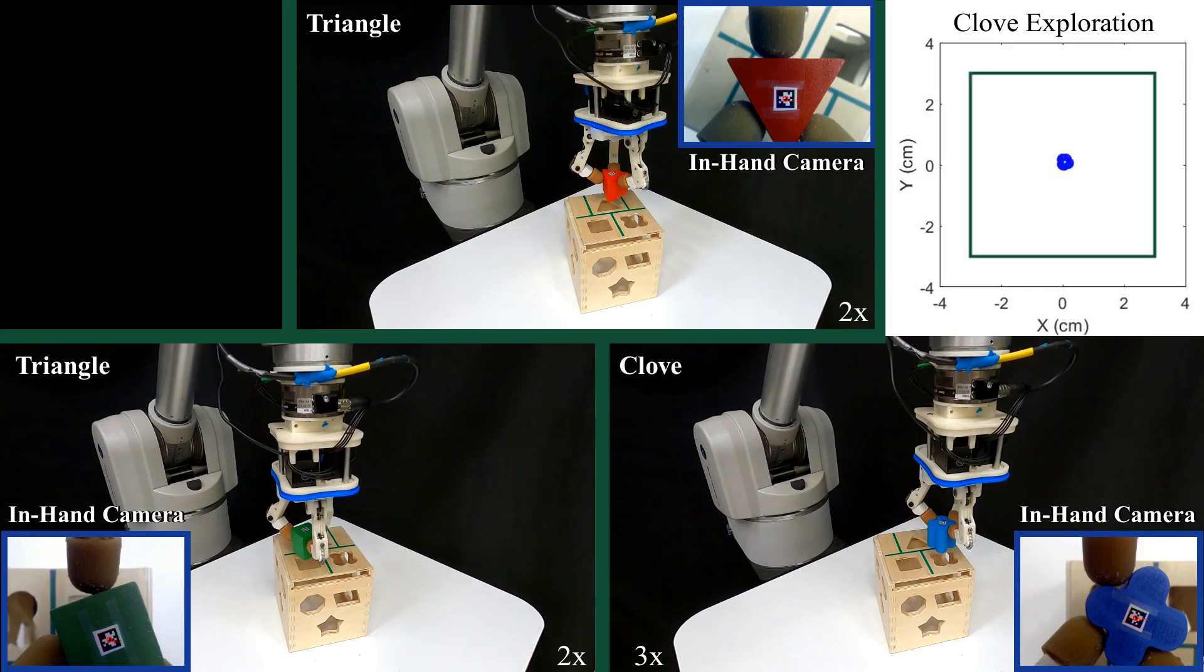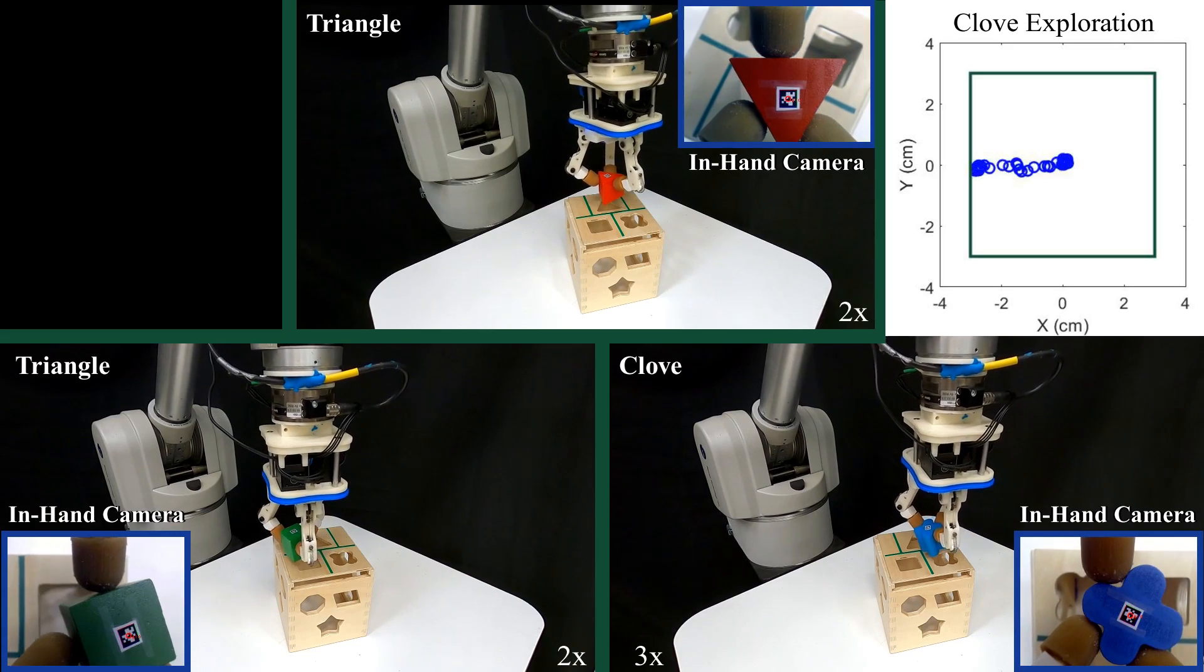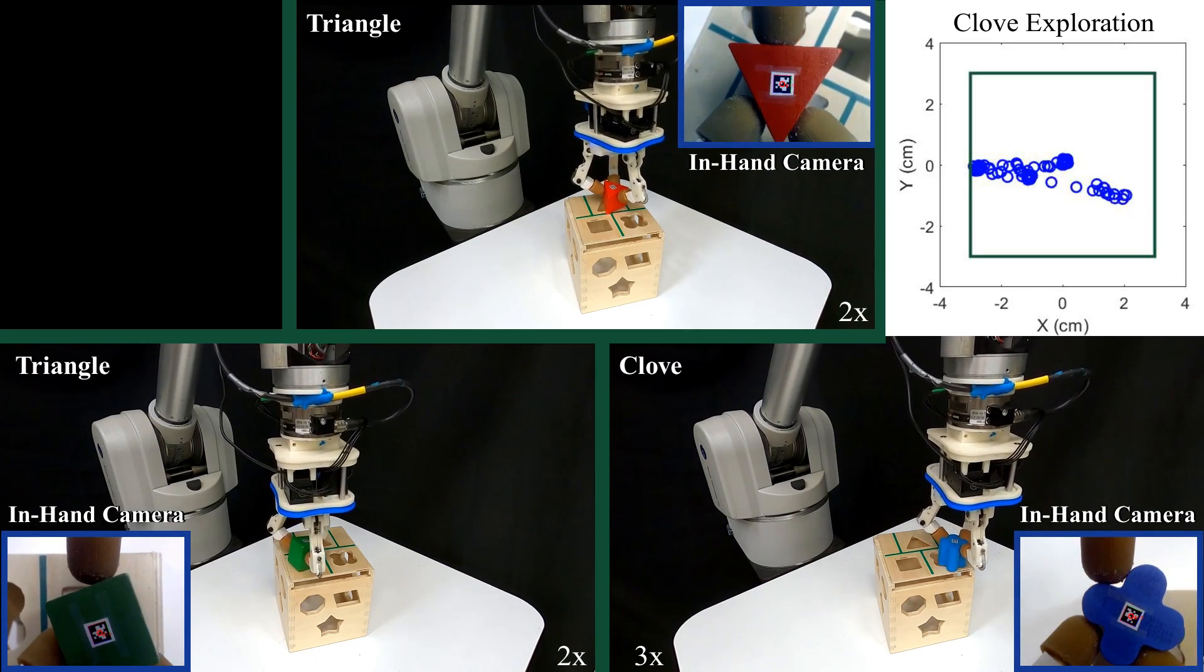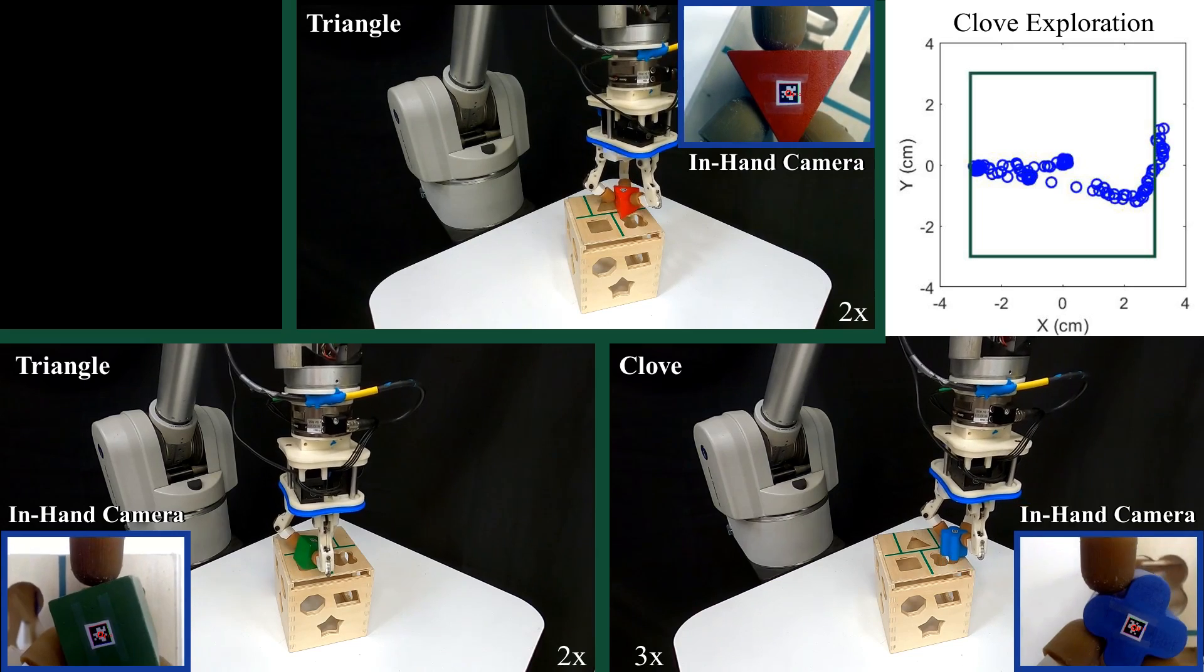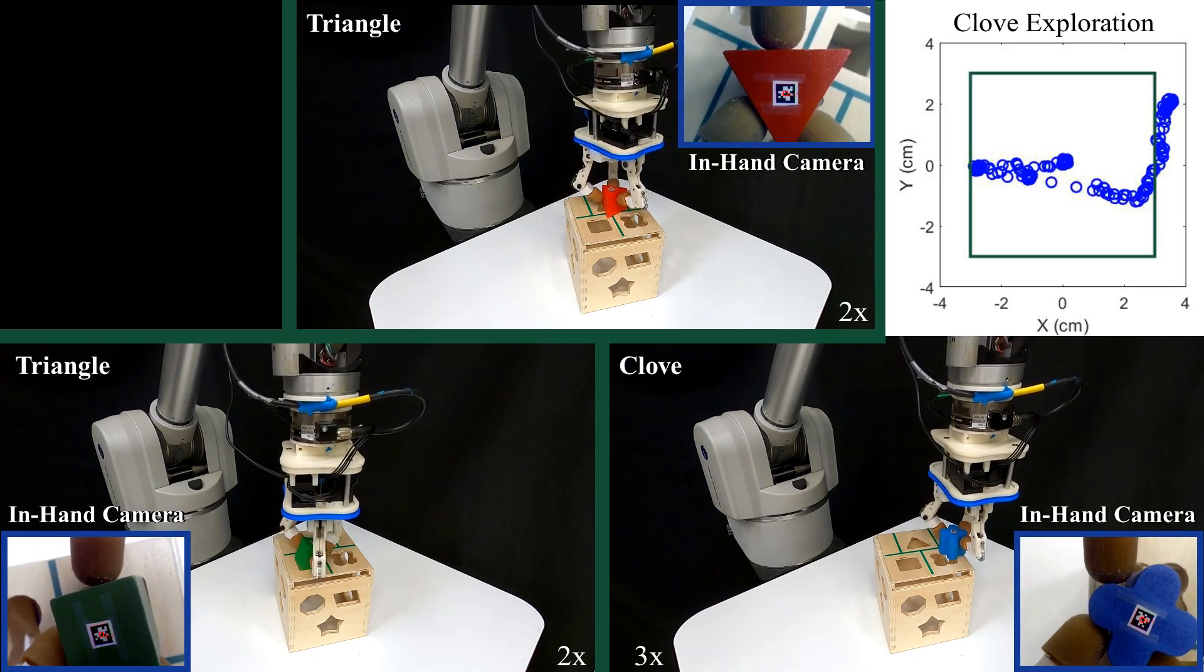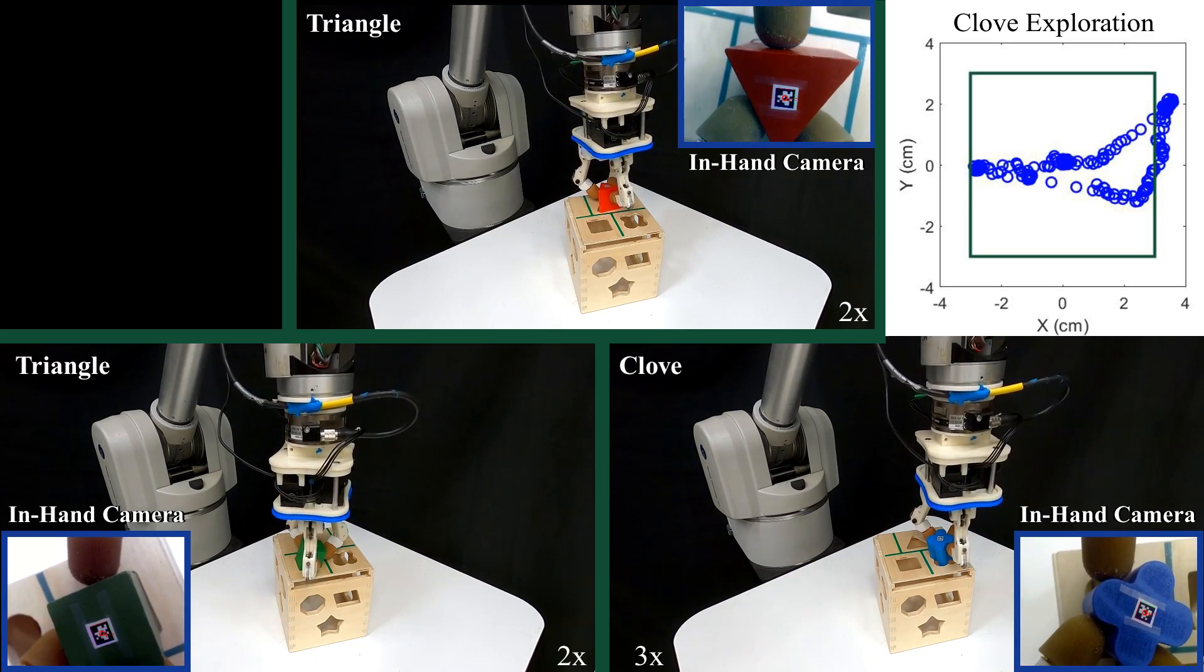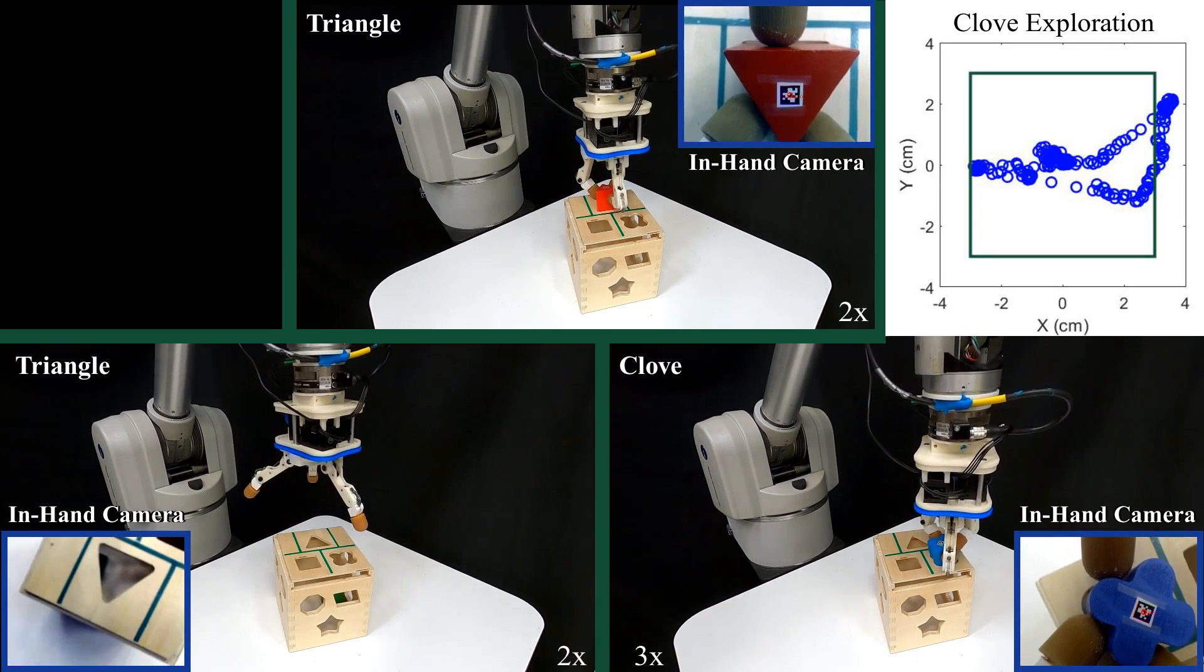A key focus of this work is our ability to successfully insert objects when the pose of the hole is somewhat unknown. Thus, our system must be able to explore a workspace before the insertion process begins. This exploration process is highlighted in this task using a commercially available children's toy. Note how the robot stays within the search workspace denoted in green, and continues until the target contact formation is acquired. Once the general location of the hole is found, the object is rotated into position and inserted appropriately.